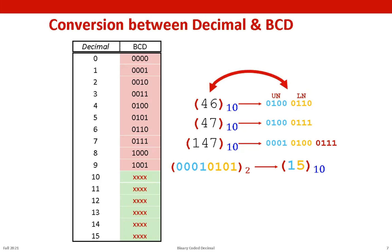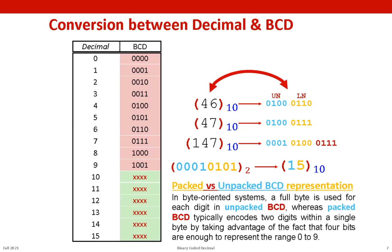Just for the sake of completeness, so that you don't get blank if packed and unpacked terminologies ever pop up in any discussion: most of the modern machines that we have today are byte-oriented systems. In the unpacked BCD representation, a full byte is used for each digit, whereas packed BCD typically encodes two digits within a single byte by taking advantage of the fact that four bits are enough to represent the range zero to nine. The unpacked representations are wasteful because it uses the whole byte which is not required. We are already wasting six patterns even when we have four bits, so why use eight bits to represent our binary codes?